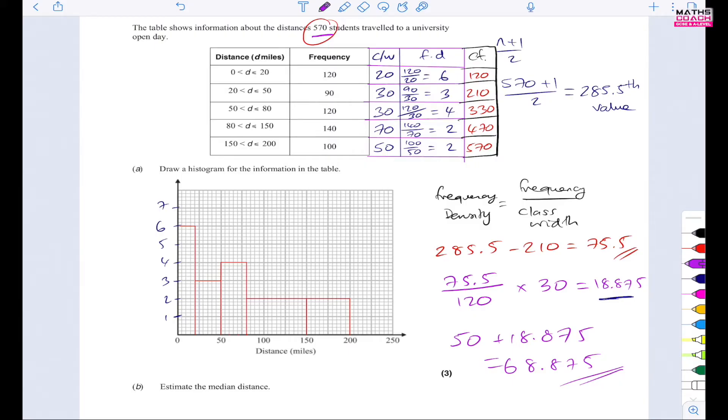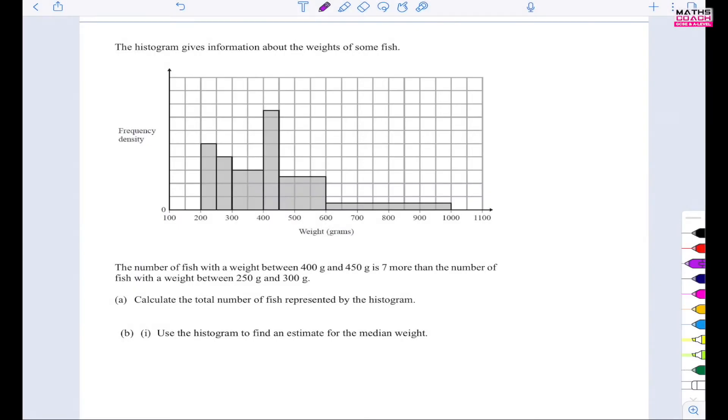Let's try this again on another question. So let's have a look at this next question. This question is asking us to calculate the total number of fish represented by the histogram, and then use the histogram to find the estimate for the median weight. Now, there is a little bit of a caveat to this question, though, because it tells you this. The number of fish with a weight between 400 and 450 is 7 more than the number of fish with a weight between 250 to 300 grams.